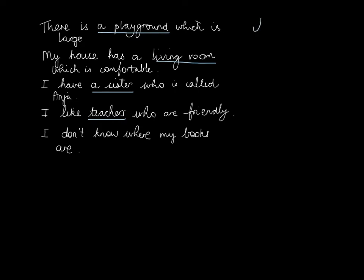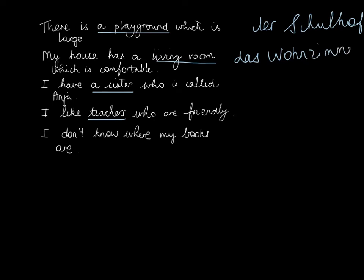It's important that you know the gender of the item that goes in front. So playground is masculine — it's going to be der Schulhof. The second sentence, living room, is neuter — so it's going to be das Wohnzimmer. In the third case, the sister is die Schwester. And in the fourth case, teachers are plural, so we're going to use the plural form: die Lehrer.